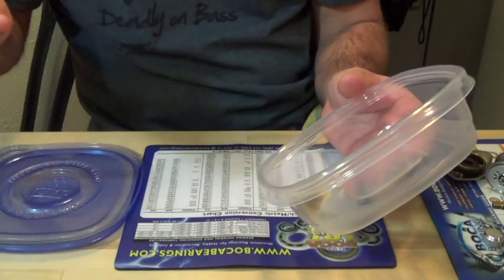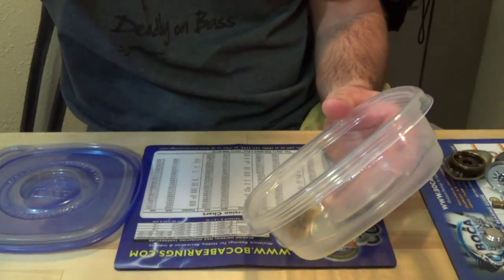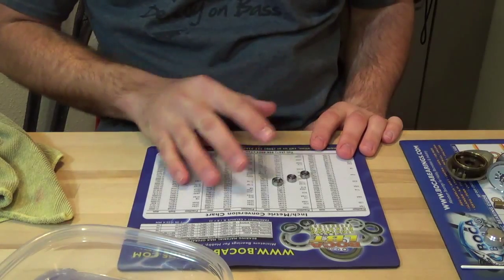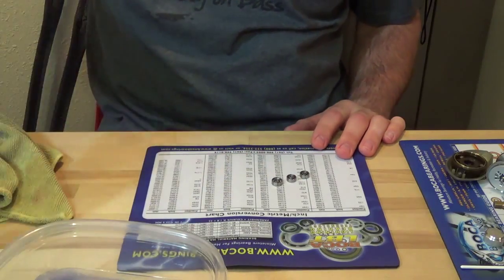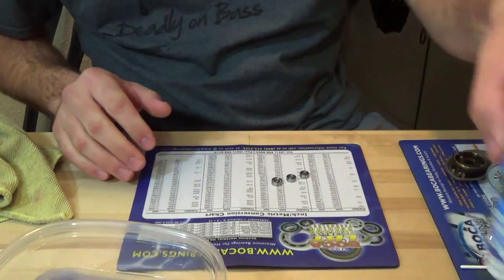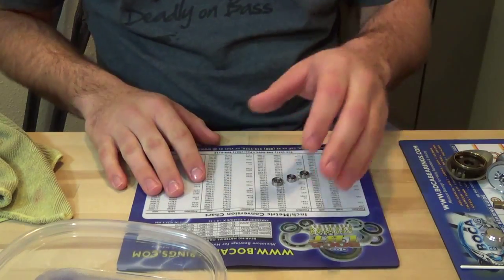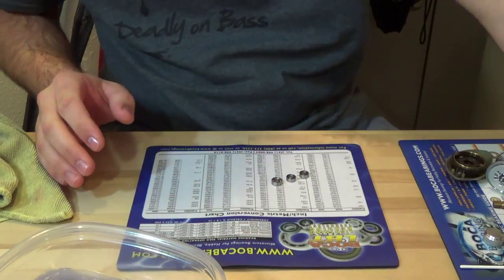Alright guys, the bearings are now dry. I had them soaking in the bearing soak for about 15 minutes. I want to make sure they have a nice, good coating of the bearing soak. Like I said, I blew them off and they're ready to go now. So, now I'm going to go ahead and oil these bearings. I'm going to use the Boca Bearing Lightning Lube High Speed Oil.